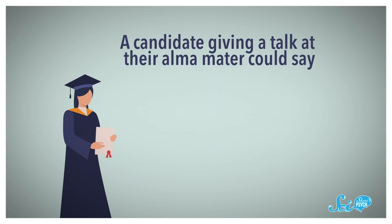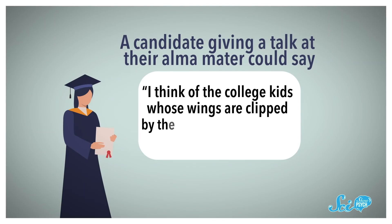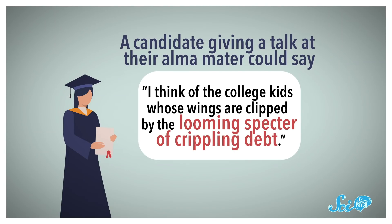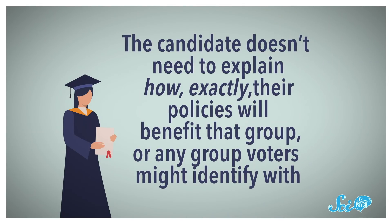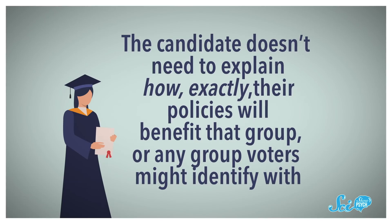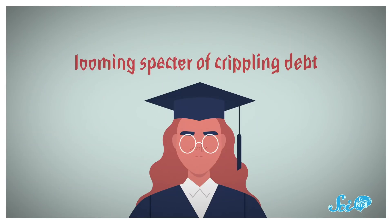Another way politicians can use identity salience is to name-drop social groups when talking about who will benefit after they get elected, or refer to a policy, threat, or solution in a way that makes it identity-related. For instance, a candidate giving a talk at their alma mater could say, "I think of the college kids whose wings are clipped by the looming specter of crippling debt." The candidate doesn't need to explain how exactly their policies will benefit that group. They just need to subtly suggest that they're one of us, and our brains fill in the gaps thanks to our false consensus effect.